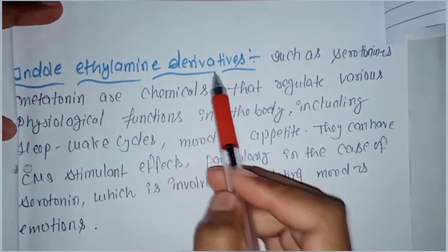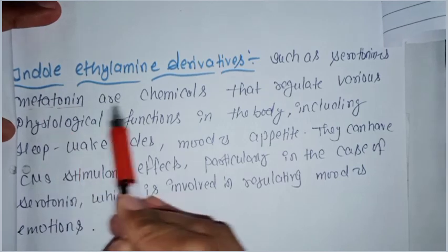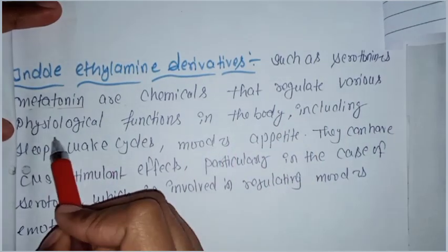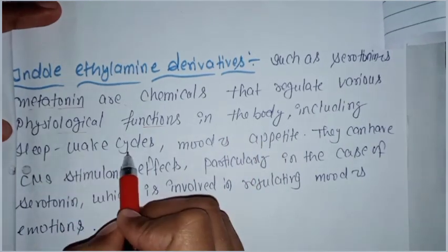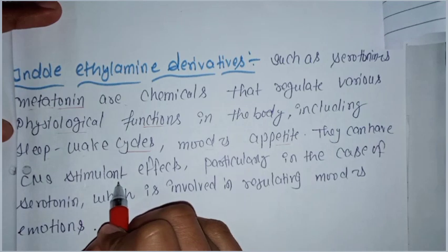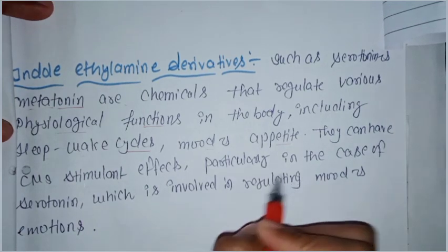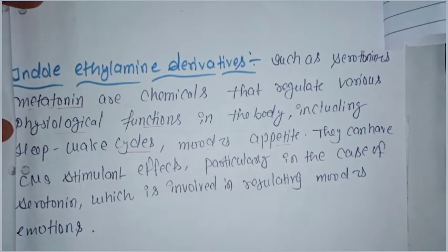Indole ethylamine derivatives such as serotonin and melatonin are chemicals that regulate various physiological functions in the body, including sleep-wake cycles, mood, and appetite. They can have CNS stimulant effects, particularly in the case of serotonin, which is involved in regulating mood and emotions.